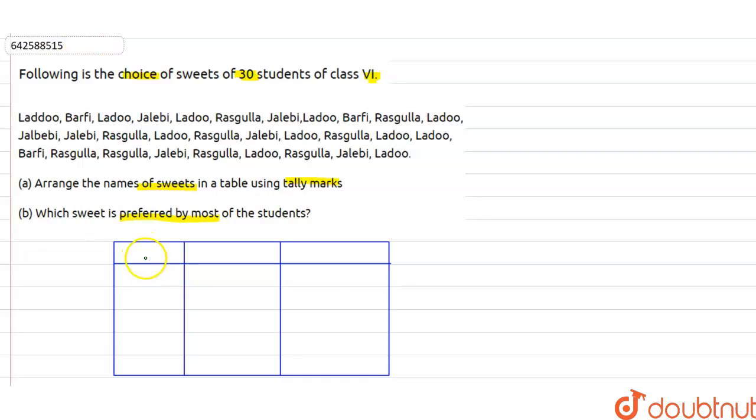So here in part A of the question, we have to make the tally marks. We have to make a table in tally marks. So here, tally, number of students who like sweet, and in first column will write the name of the sweet.